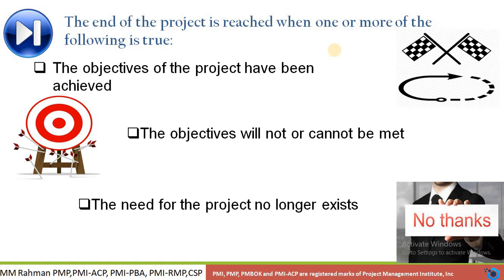When the objectives of the project have been achieved, the project is finished. Also, when the objectives will not or cannot be met — sometimes we realize we are unable to meet the objectives — that time we also say the project is finished. If the purpose of the project can no longer be fulfilled and we are not going to invest anymore, we close that project.